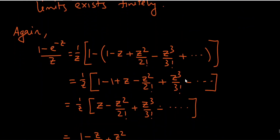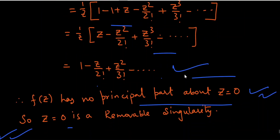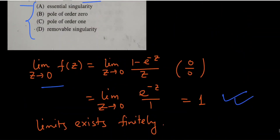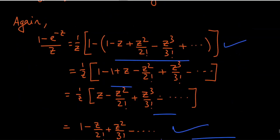Expanding the series: (1 - e^(-z))/z = (1/z)[z - z²/2! + z³/3! - ···] = 1 - z/2! + z²/3! - ···. We see f(z) has no principal part about z = 0, confirming that z = 0 is a removable singularity. The correct answer is option D.